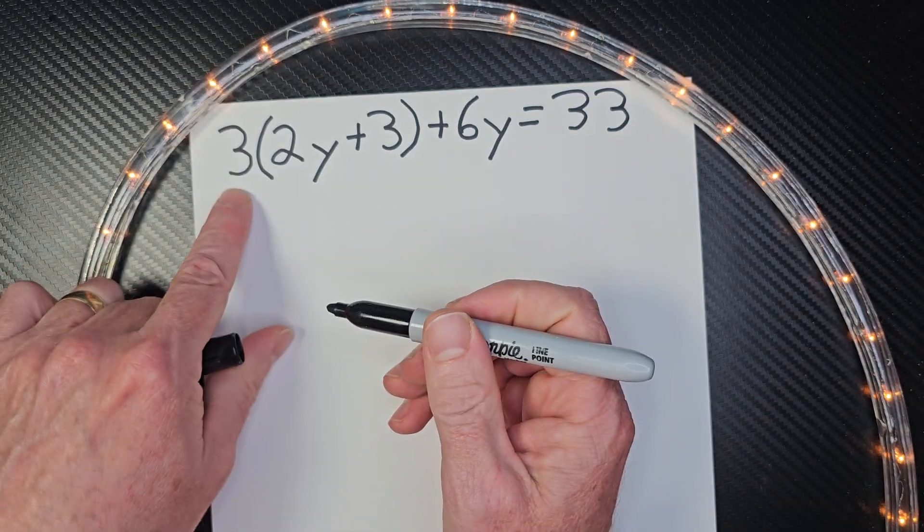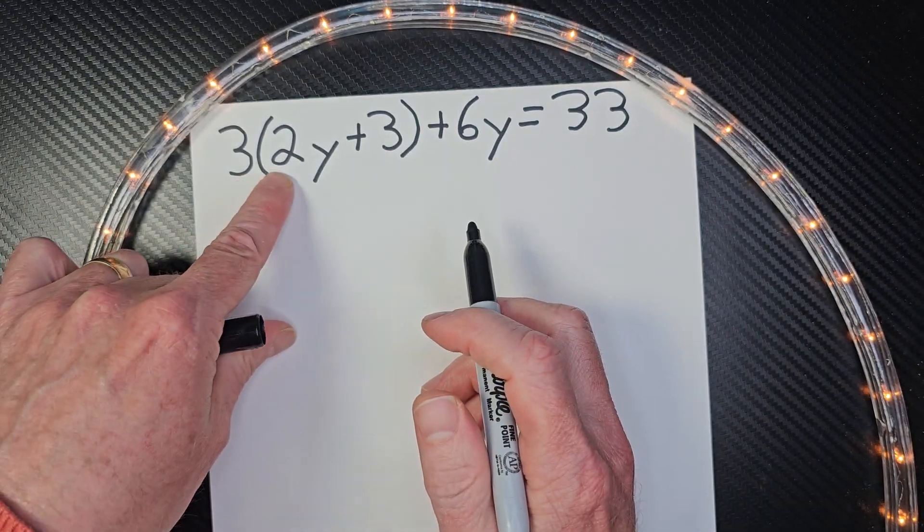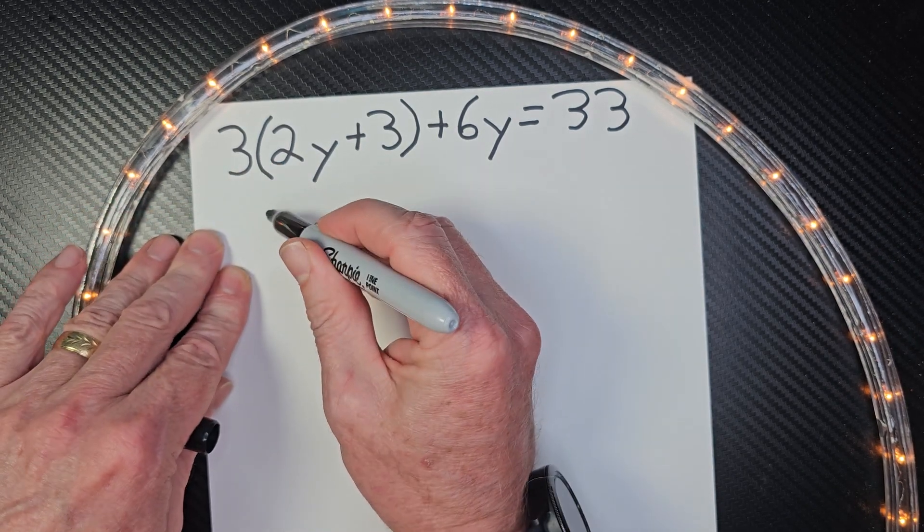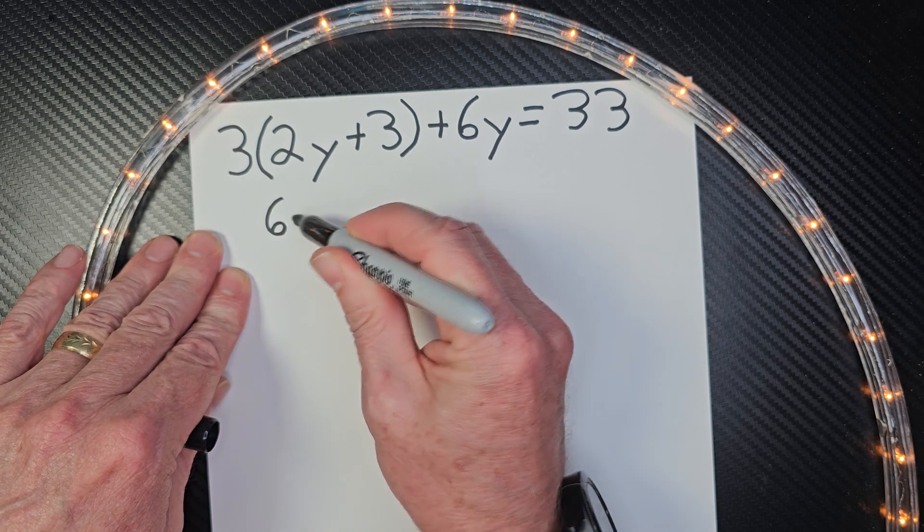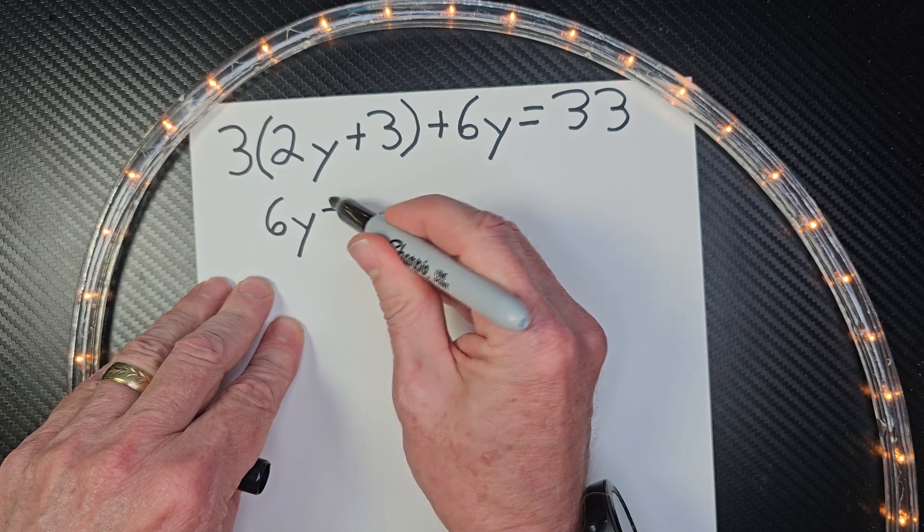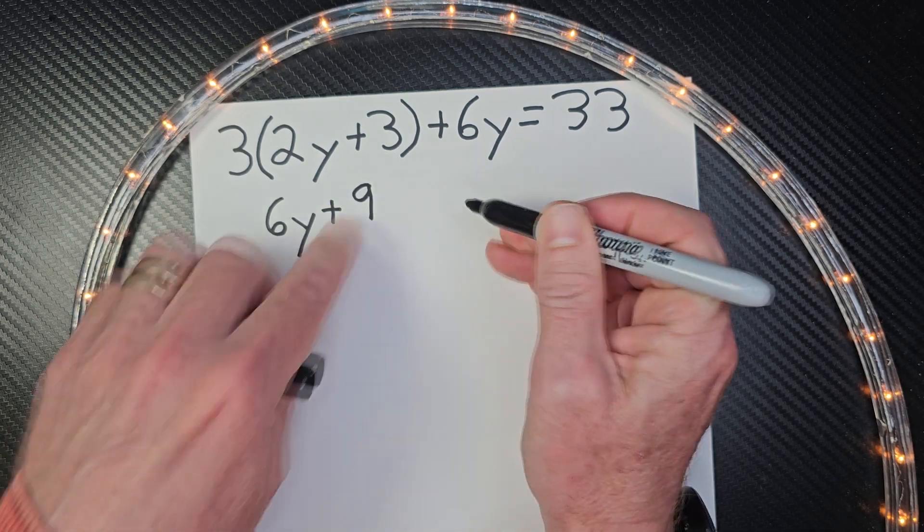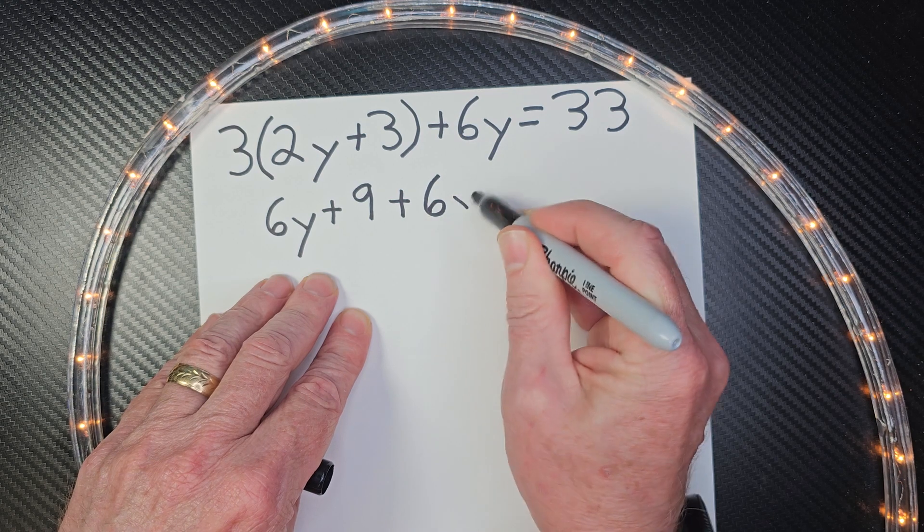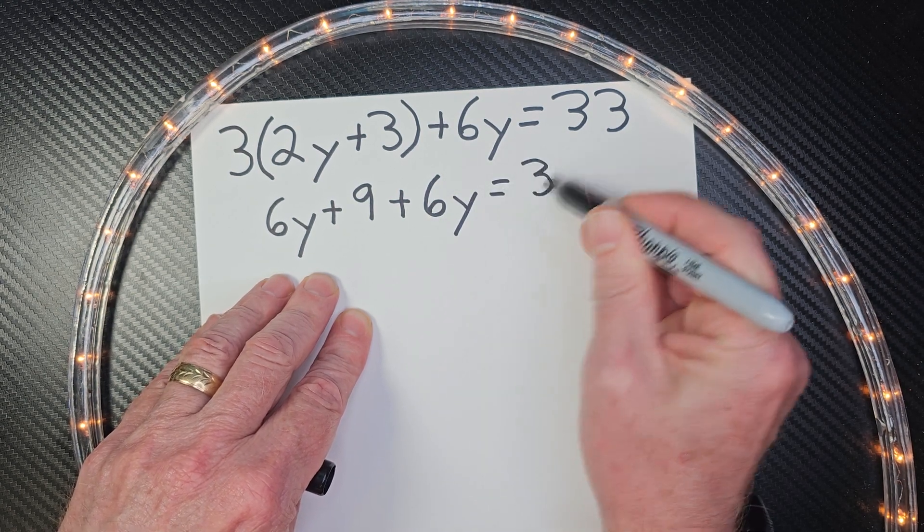So right now, I'm going to go ahead and multiply 3 times 2Y plus 3. So 3 times 2 would be 6, so this would be 6Y. And then 3 times 3 would be 9. And then plus 6Y, and then equals 33.